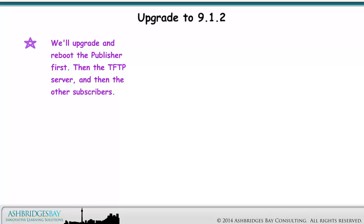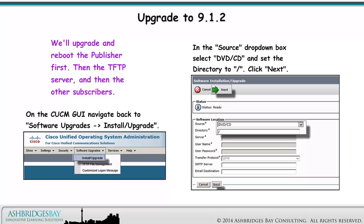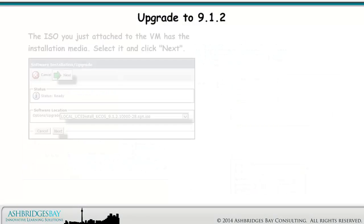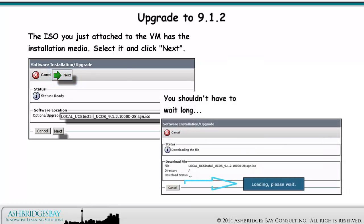We'll upgrade and reboot the publisher first, then the TFTP server, and then the other subscribers. On the CUCM GUI, navigate back to Software Upgrades > Install Upgrade. In the Source drop-down box, select DVD CD and set the directory to slash. Click Next. The ISO you just attached to the VM has the installation media. Select it and click Next. You shouldn't have to wait long.